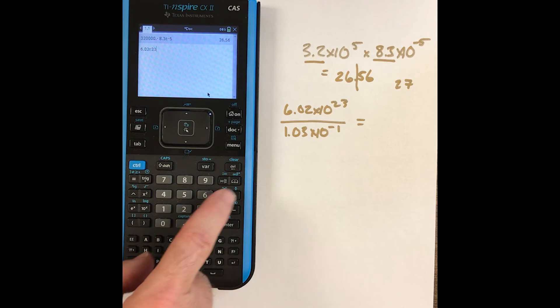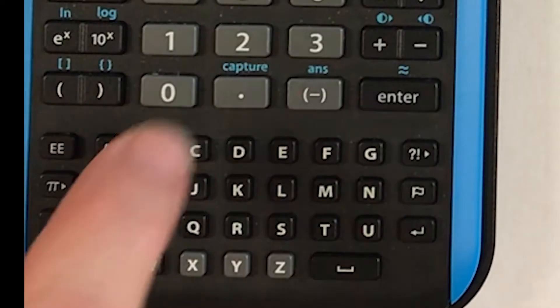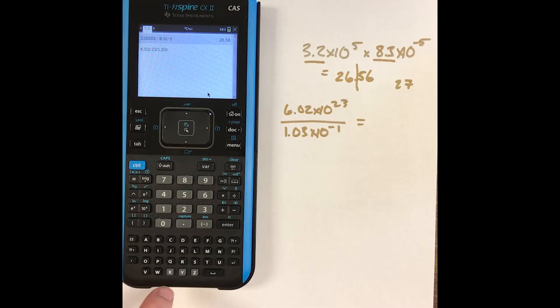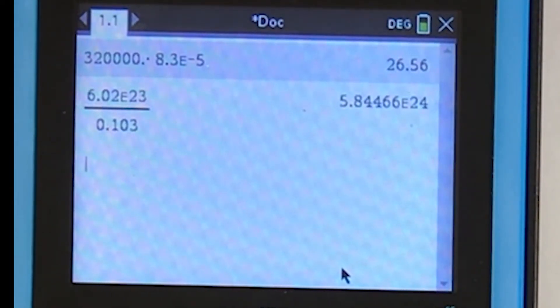divided by 1.03, double E, negative 1. You see how I did that? And I get this number,